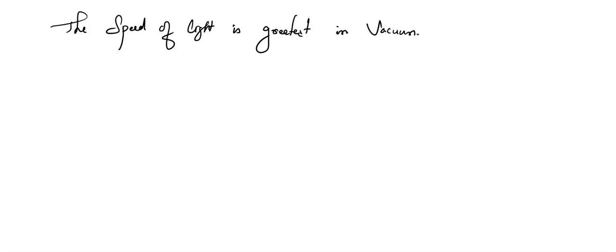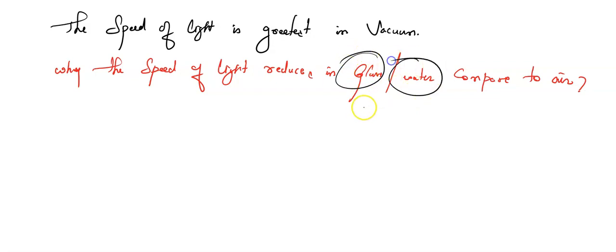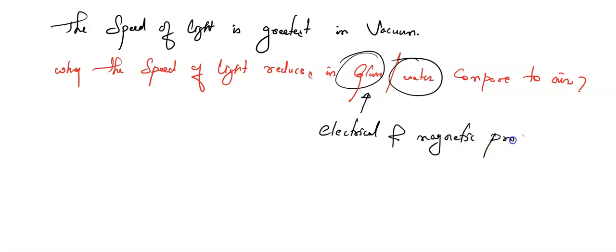Why does the speed of light reduce in glass or water compared to air? The answer is: due to the electrical and magnetic properties of that medium — of glass or water — the speed of light is reduced. This is the reason the speed of light is not the same in all mediums.